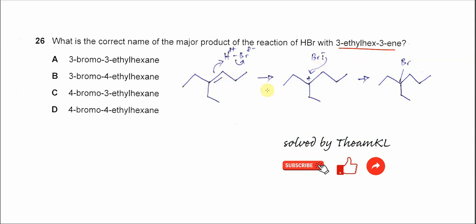So 3-ethylhex-3-ene, we need to get the longest carbon chain: 1, 2, 3, 4, 5, 6. So 6 carbon chain.